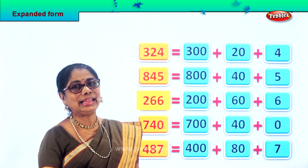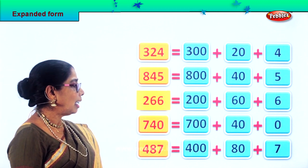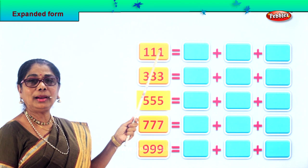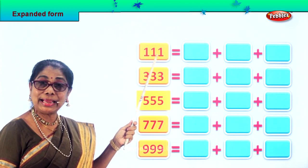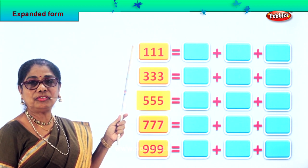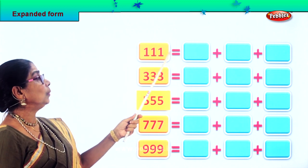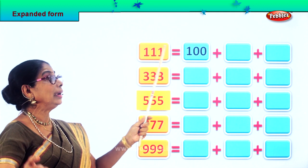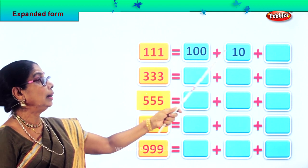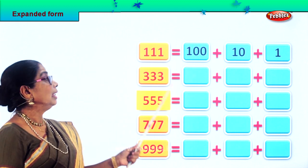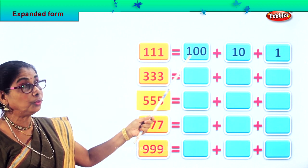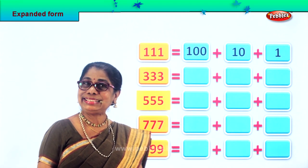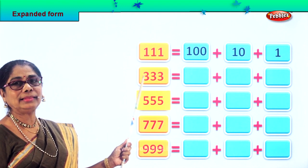Let's take another set of numbers. First we have 111 — one in the ones place, one in the tens place, one in the hundreds place. So 111 equals one hundred plus ten plus one.